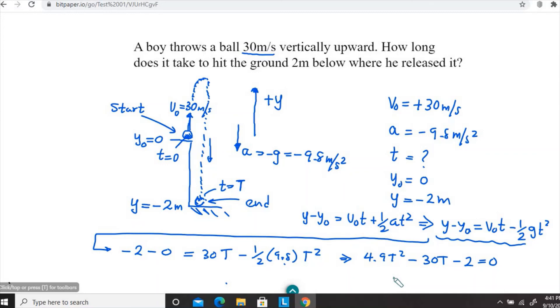I'll replace this t by uppercase T. Minus one half, I'm going to substitute for g, 9.8 meters per second squared and t squared. Remember, don't substitute a minus sign again to this 9.8 because we already did that when we moved from this step to this step.